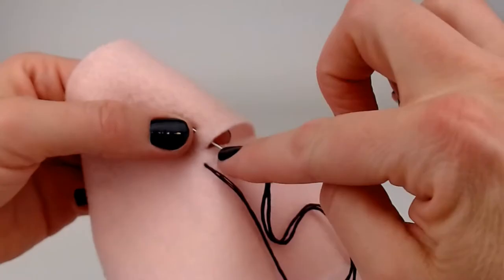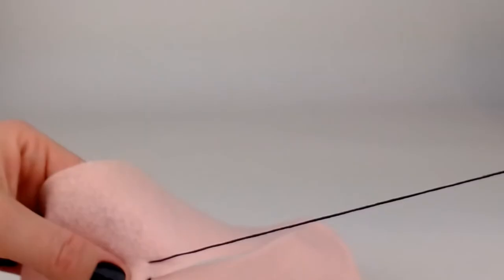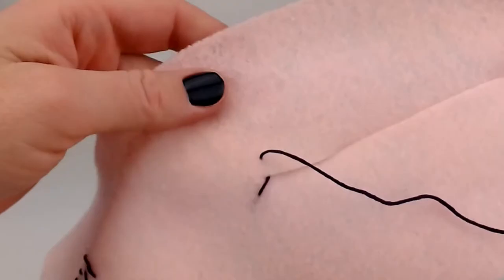You can take an air-soluble or water-soluble marker and draw lines parallel for this. I'm not going to be bothered. So here's my first stitch, see that? Now I'm going to take my needle and I'm going to go down in the cut and up.